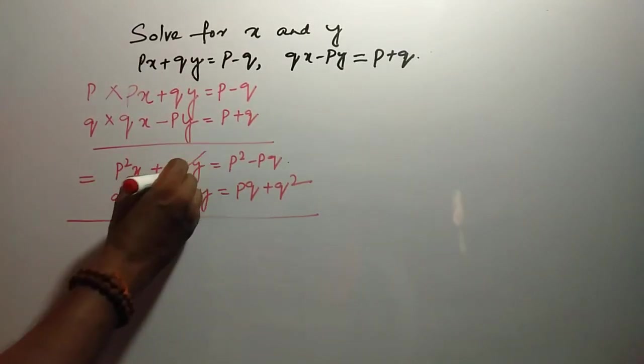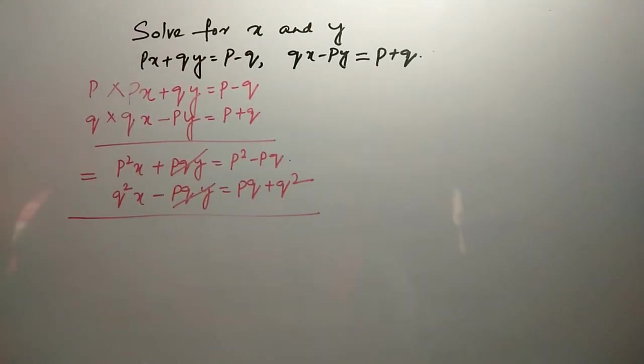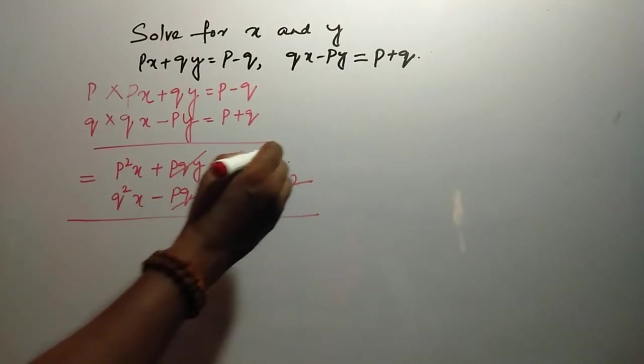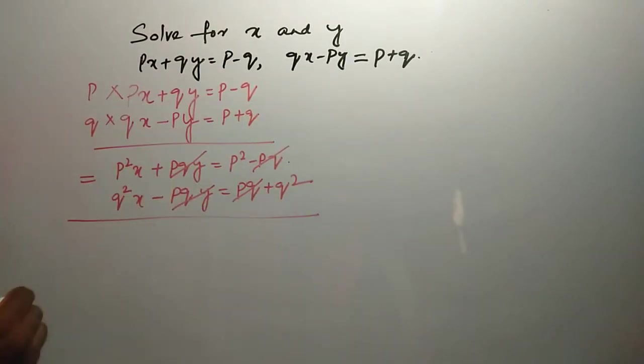So, plus minus cancelled eliminating Y here and here also minus PQ plus PQ cancelled.